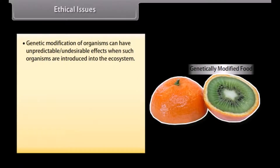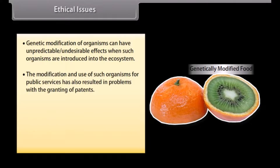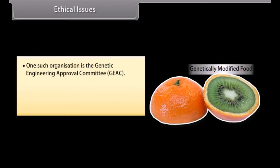Ethical issues: Genetic modification of organisms can have unpredictable, undesirable effects when such organisms are introduced into the ecosystem. The modification and use of such organisms for public services has also resulted in problems with the granting of patents. Hence, the Indian government has set up organizations authorized to make decisions regarding the validity of genetic modifications and the safety of introducing GMOs for public services. One such organization is the Genetic Engineering Approval Committee.